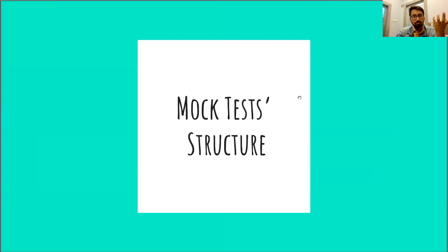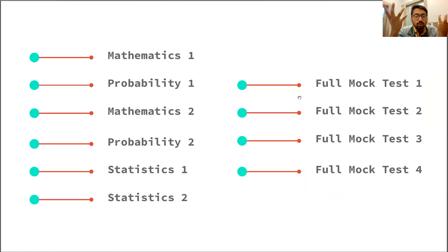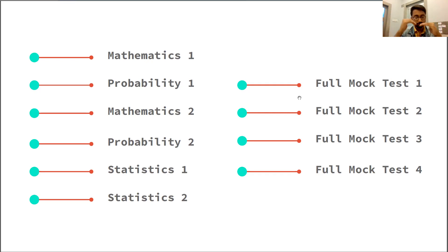I will tell you why we made the mock test structure as we have. First is Mathematics 1, because that's the earliest thing we teach, then Probability 1, Mathematics 2, Probability 2, Statistics 1 — just as the way we are teaching the whole topics. Then there are full mock tests. What I suggest, which I will tell you in later slides, is what to do up to each of the mock tests — whether you're giving it with us or anywhere else. What's the best strategy out there?